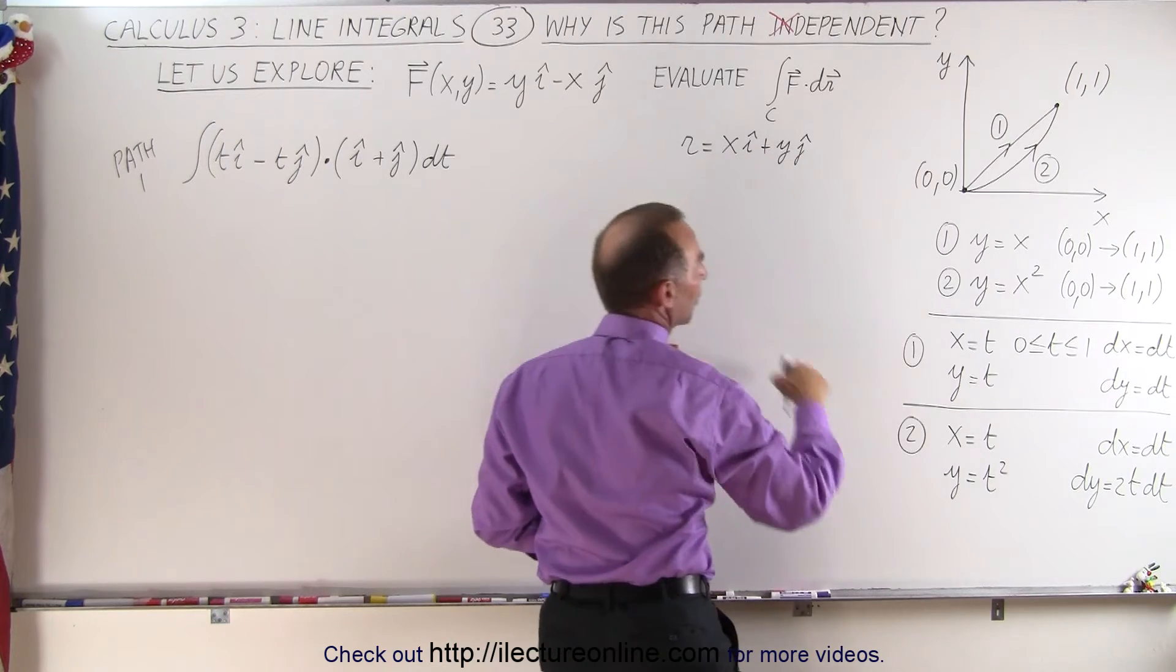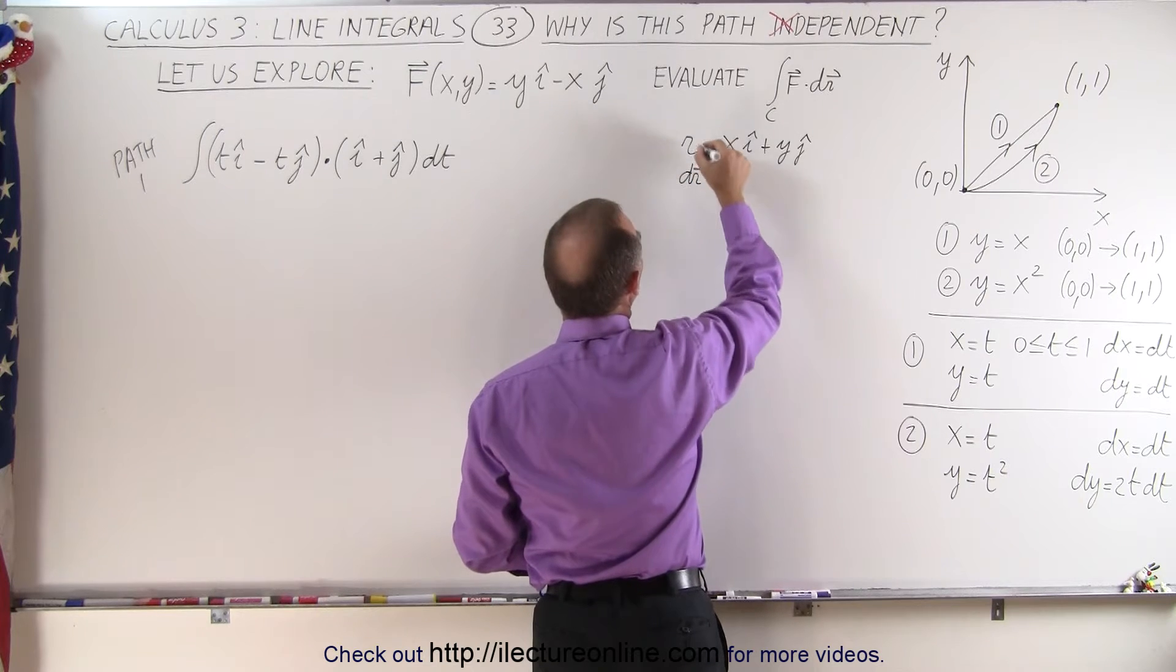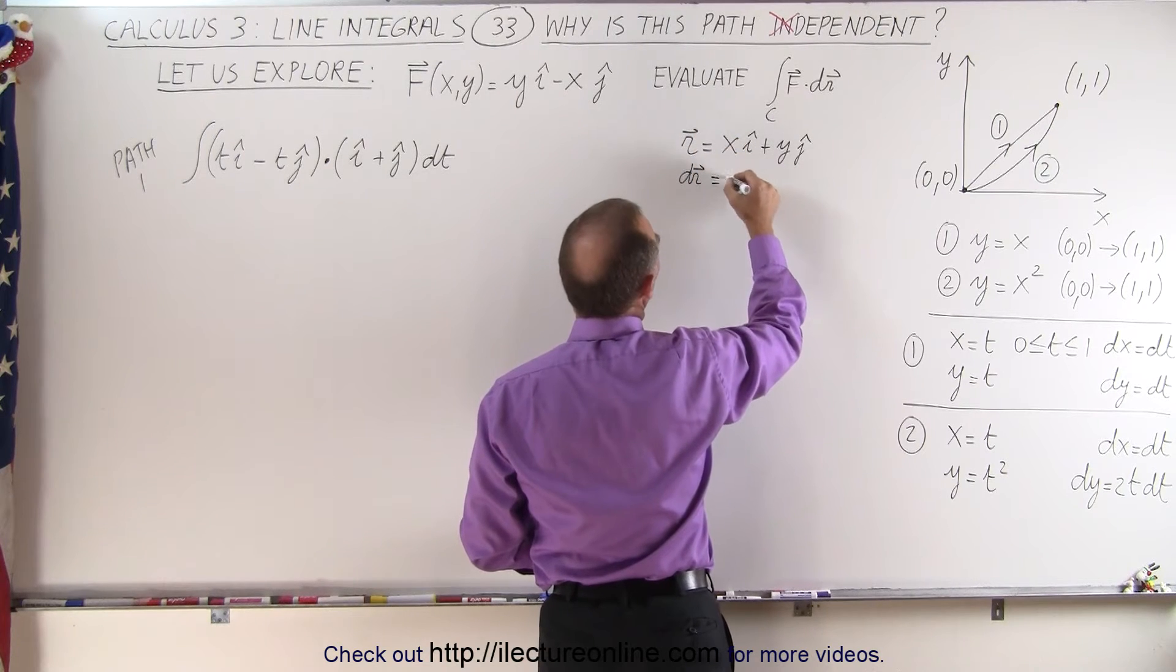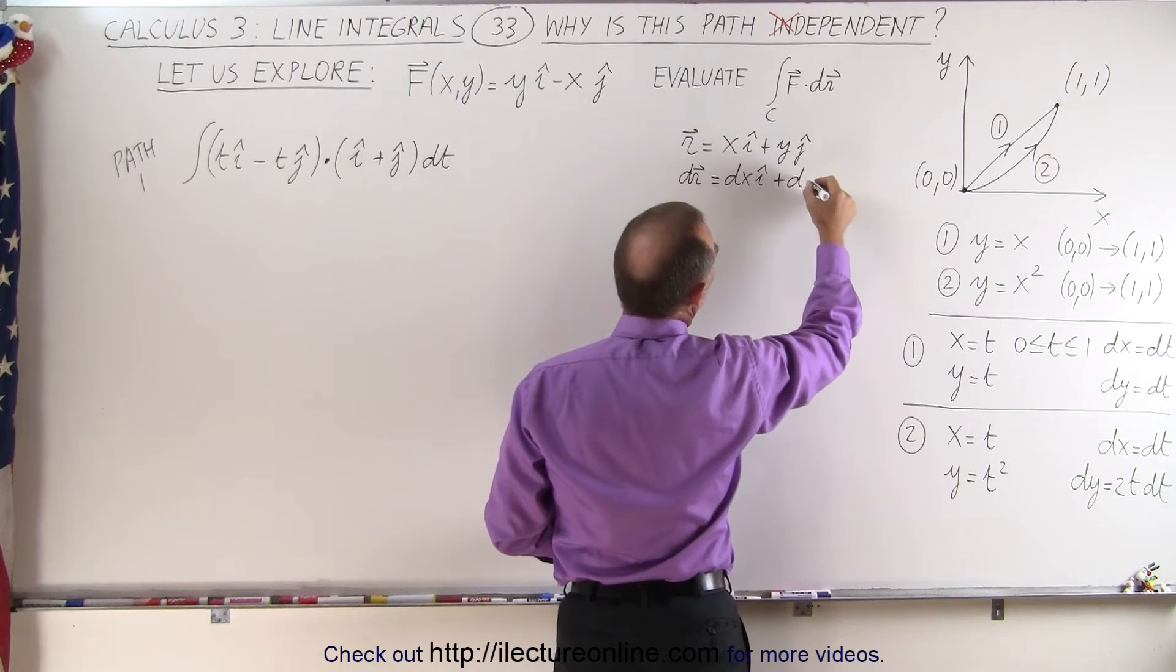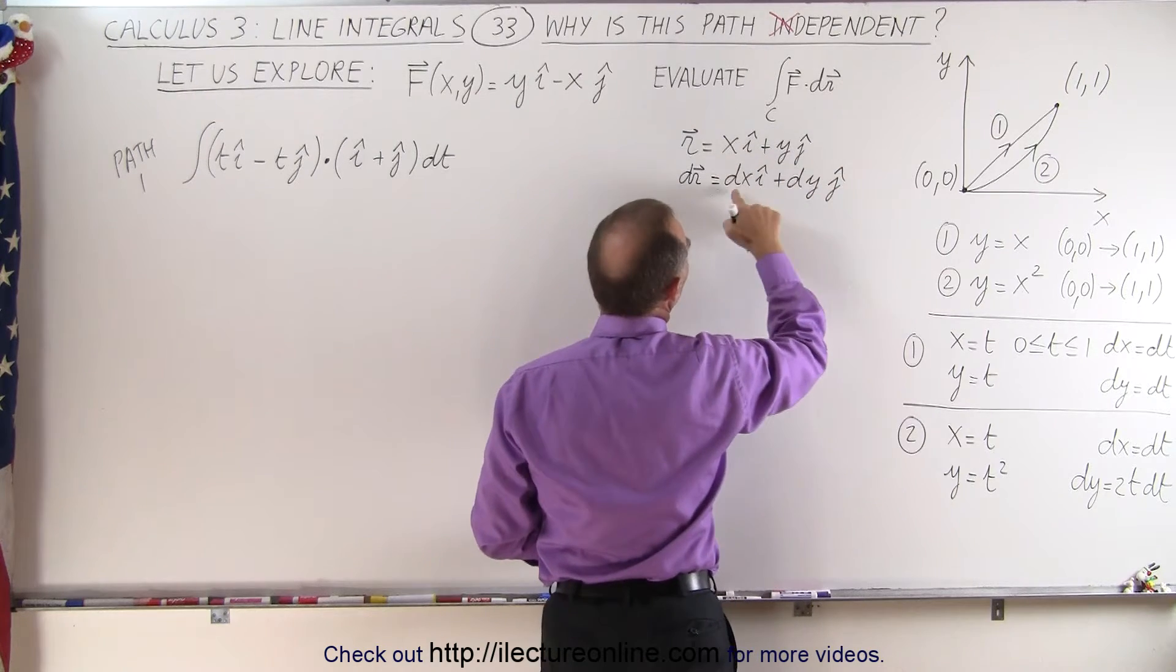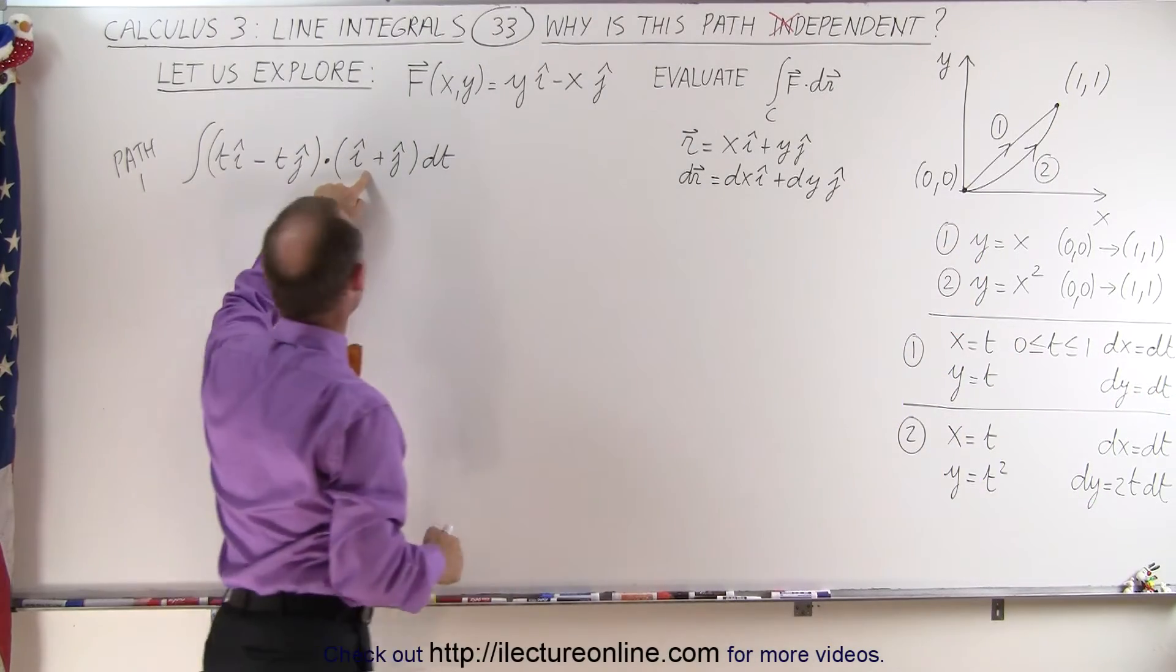r is going to be equal to x in the i direction plus y in the j direction, and of course x and y are going to be replaced by t. And when we take the dr, then this is going to be equal to dx in the i direction plus dy in the j direction, and then dx and dy replaced by dt, and therefore we end up with this as our dr.